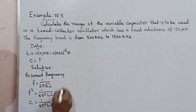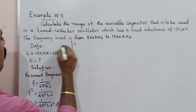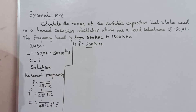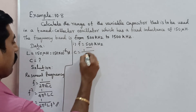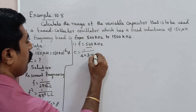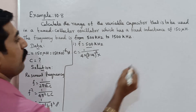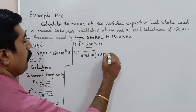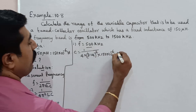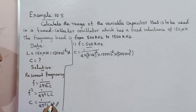Using this formula, for frequency f equals 500 kilohertz, the capacitance formula is C equals 1 divided by 4 into 3.14 whole square into L value 150 into 10 to the power minus 6, into F square where F value is 500 kilo — 500 into 10 to the power 3 — frequency squared.